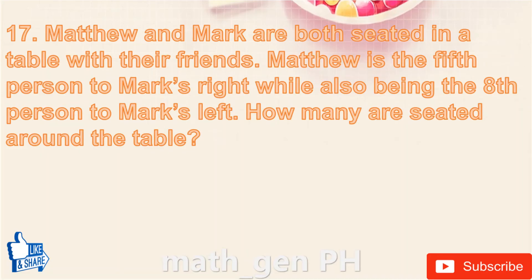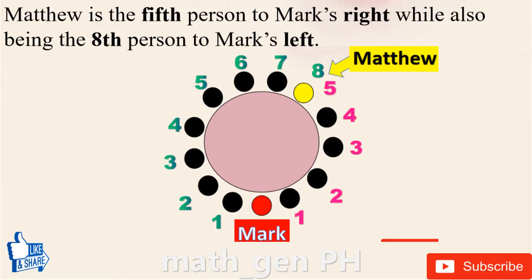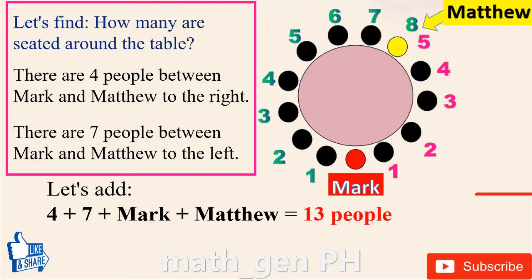Question number 17: Matthew and Mark are both seated at a table with friends. Matthew is the 5th person to Mark's right while also being the 8th person to Mark's left. How many are seated around the table? Solution: there are 4 people between Mark and Matthew to the right, and 7 people between them to the left. 4 plus 7 plus Mark plus Matthew equals 13 people. Answer: 13.